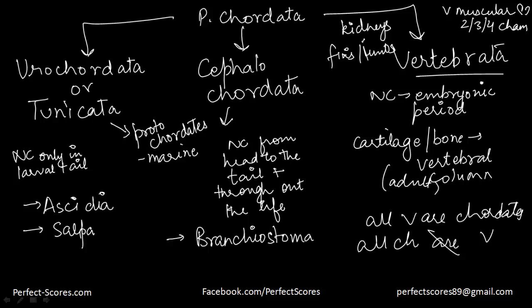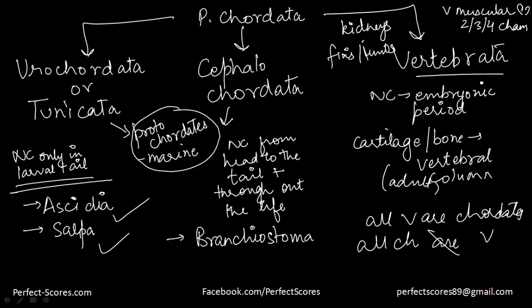Let's quickly revise the three subphyla. Urochordata and Cephalochordata are protochordates and all marine. In Urochordata, the notochord is present only in the larval tail — examples are Ascidia and Salpa. In Cephalochordata, the notochord is present from head to tail throughout life — example is Branchiostoma. Vertebrata have the notochord only in the embryonic period, replaced in adults by a cartilaginous or bony vertebral column. Extra features include a ventral muscular heart with 2, 3, or 4 chambers, kidneys for osmoregulation and excretion, and fins or limbs as appendages.